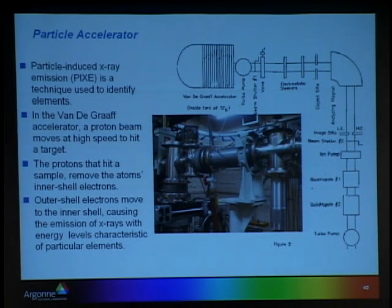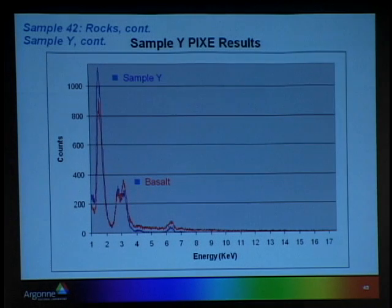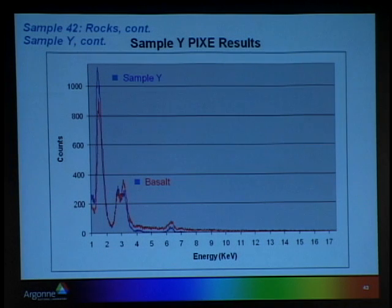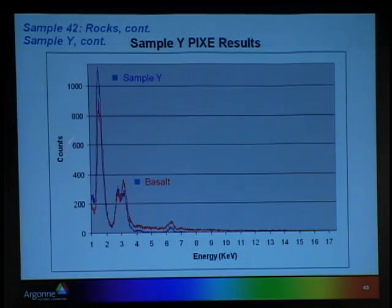This leads to the emission of x-rays, and these can be measured to identify the sample. We used both sample Y and basalt in the accelerator, and as you can see from the graph, these are similar results.